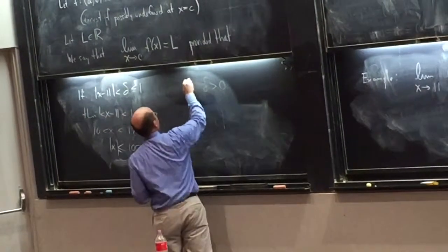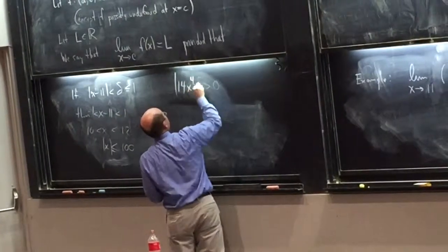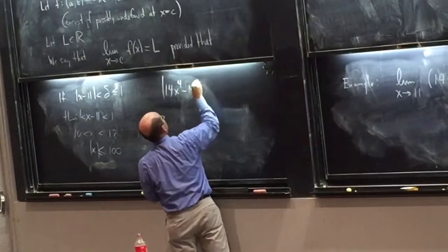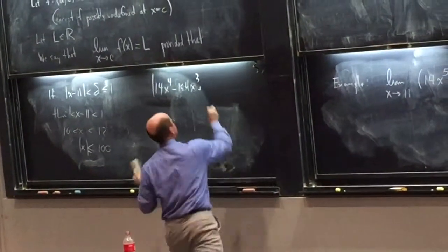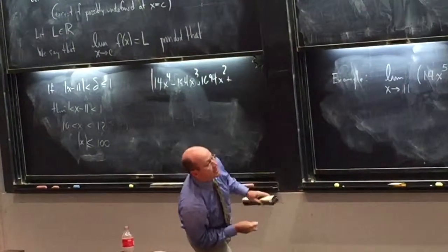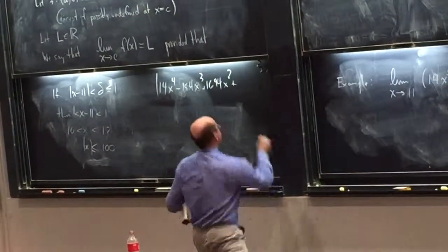Because x is less than 100, 14x to the fourth, what are the other terms over there? Minus 154x cubed, plus 1694x squared. I think I forgot a term probably, but whatever. 18,628.